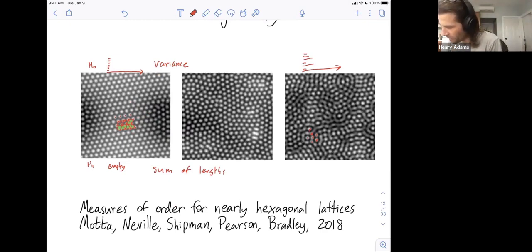And in this picture on the right, maybe you have four points that don't really form a triangle so quickly, they form the square. And so you are going to have some small noisy bars in the one-dimensional persistent homology.